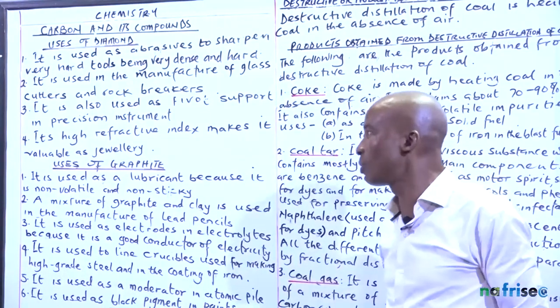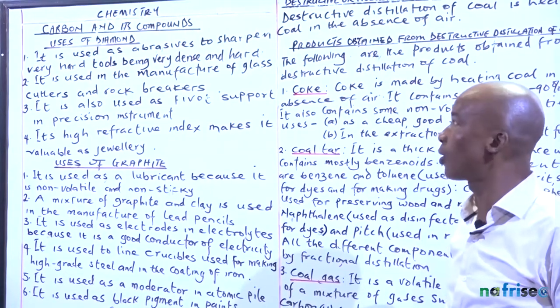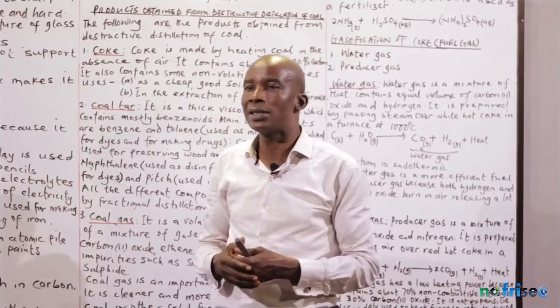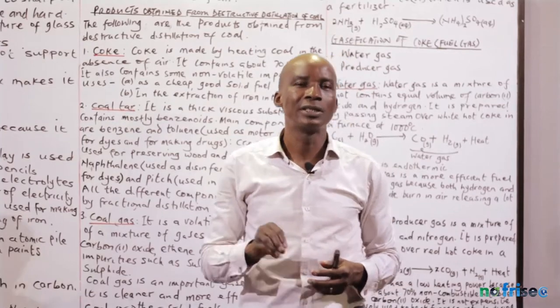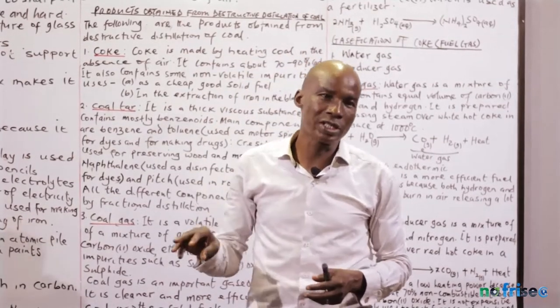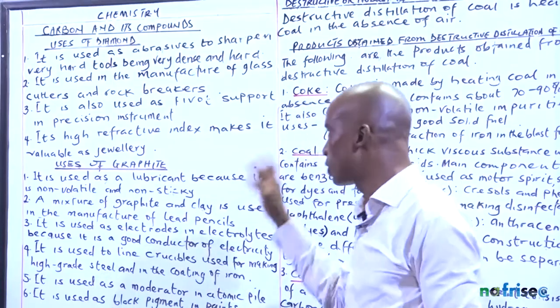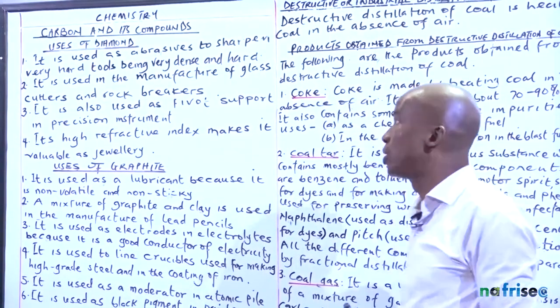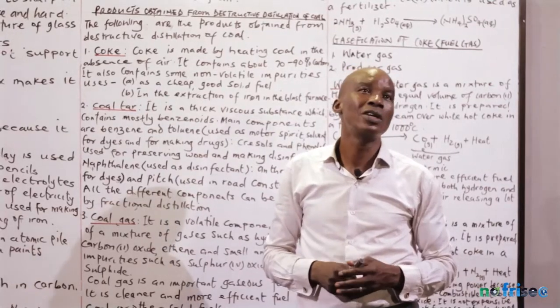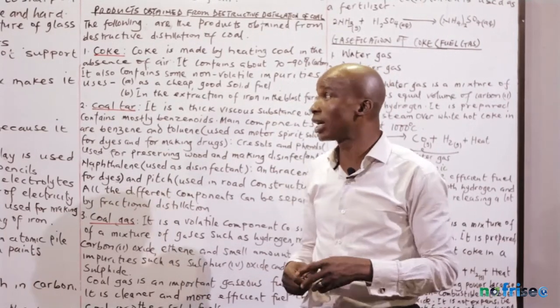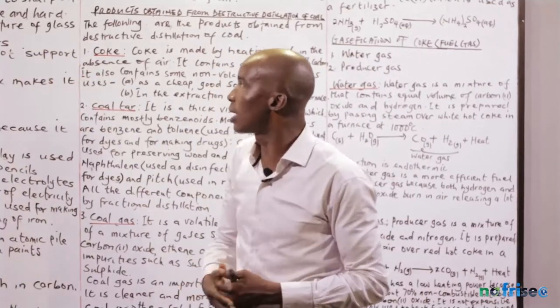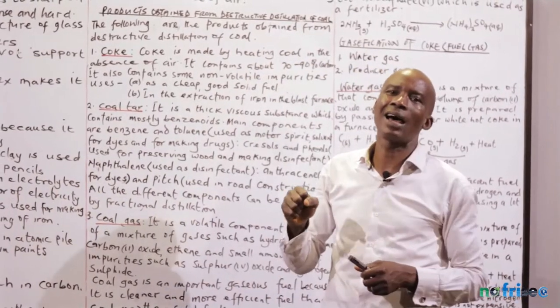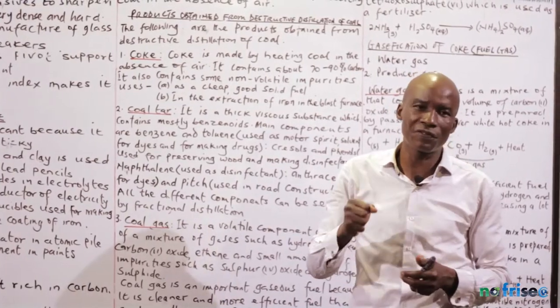Good news students. Last time we met we were on carbon and its compounds. Today we're going to continue from where we stopped. We'll be looking at the properties of diamond, properties of graphite, uses of diamond, and uses of graphite. Diamond is used as an abrasive because it is very dense and hard, so we use it to sharpen very hard tools.